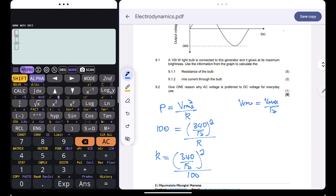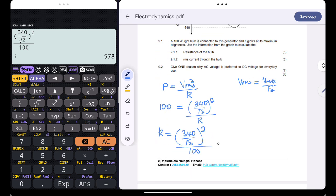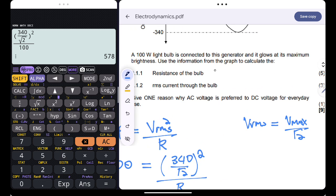Let's just do this. I have 340 divided by the square root of 2, all squared, all divided by 100. So the resistance is just 578 ohms, the resistance of our light bulb.